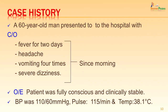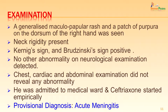Today we discuss the case of a 60-year-old man who presented with fever for two days, headache, vomiting four times since morning, and severe dizziness. On examination the patient was fully conscious and clinically stable; blood pressure was normal, pulse was 115 per minute and temperature was 38.1 degrees centigrade. A generalized maculopapular rash and a patch of purpura was seen on the dorsum of the right hand. Neck rigidity was present and the two classical signs of meningitis — Kernig's sign and Brudzinski's sign — were positive.